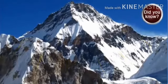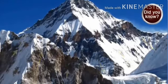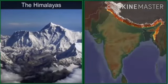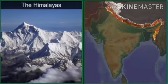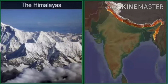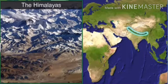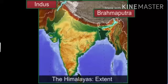Geologists believe that the Himalayas are still continuing to rise by one centimeter every year. The Himalayas are fold mountains that cover the northern border of India. They are geologically young as compared to other mountain ranges. The Himalayan range is the highest and the most rugged mountain range in the world, extending from the river Indus in the west to the Brahmaputra in the east, forming an arc of about 2,400 kilometers.